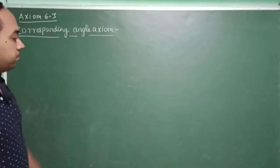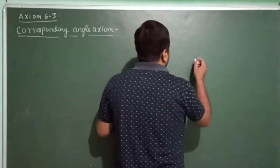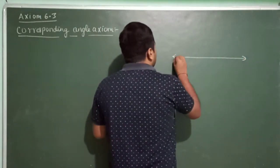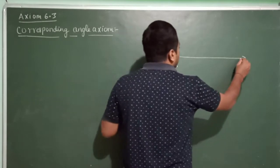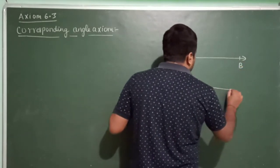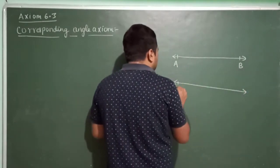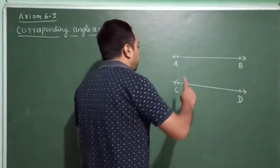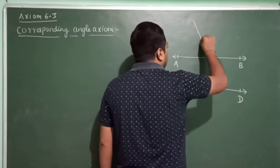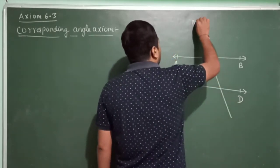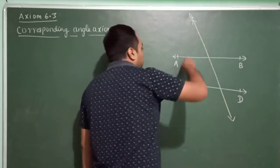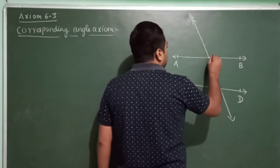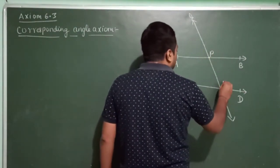For explaining Corresponding Angle Axiom, I need 2 parallel lines. Suppose this is line AB, and this is one more line CD. These are the 2 parallel lines AB and CD. Now, these 2 parallel lines are intersected by a transversal — say, line L. A transversal is a line which intersects 2 or more lines at different points. This transversal L intersects AB at P and CD at E.